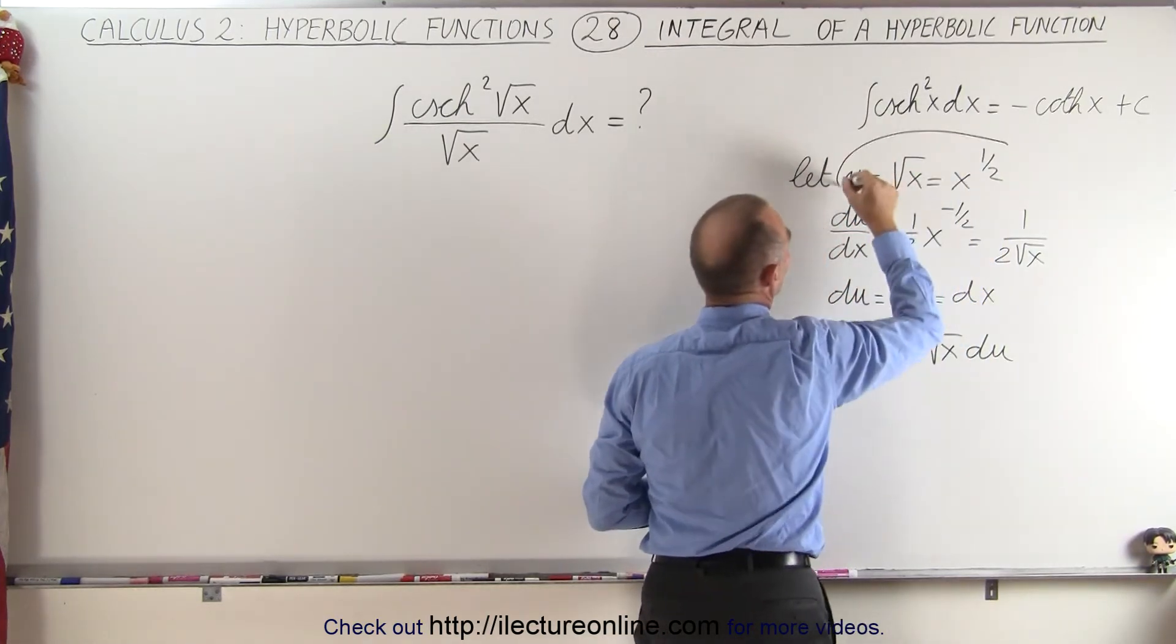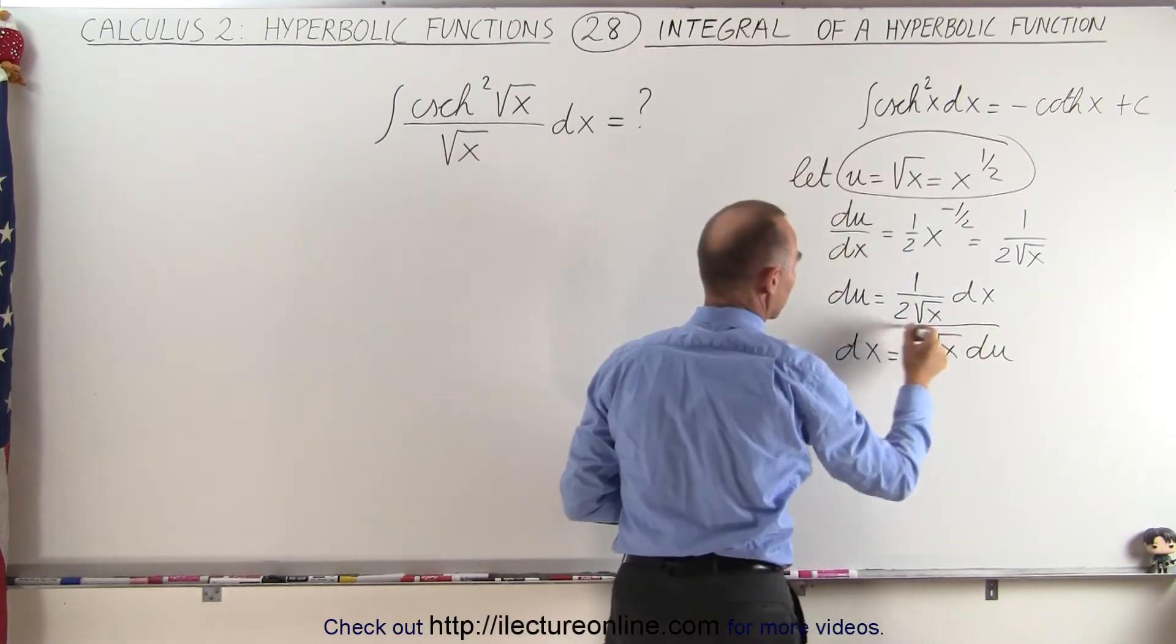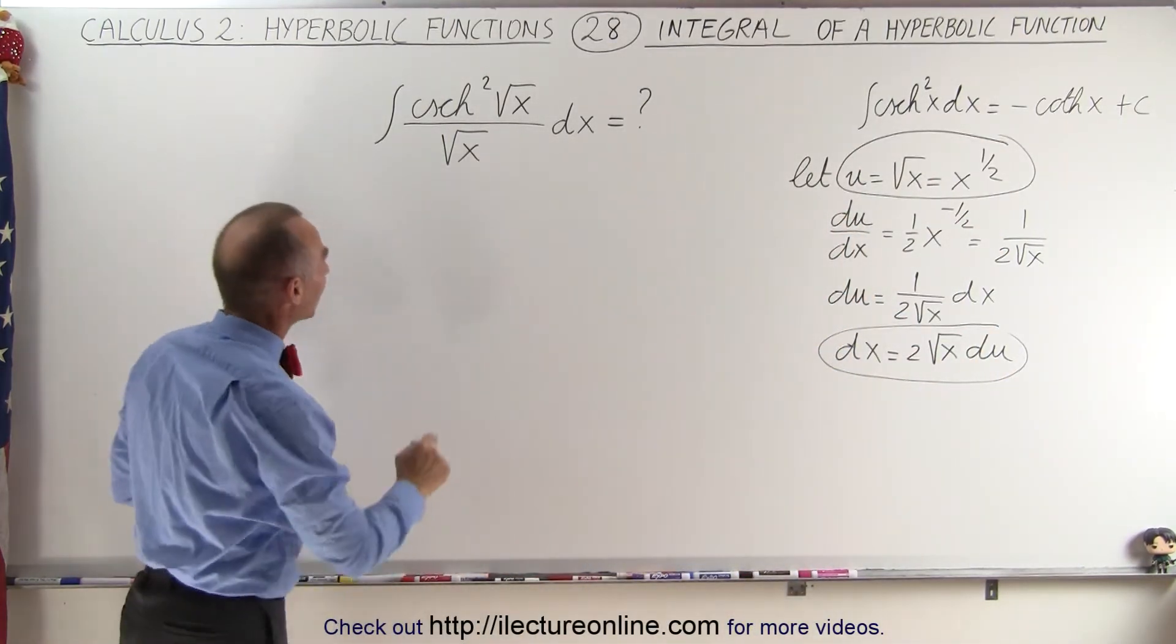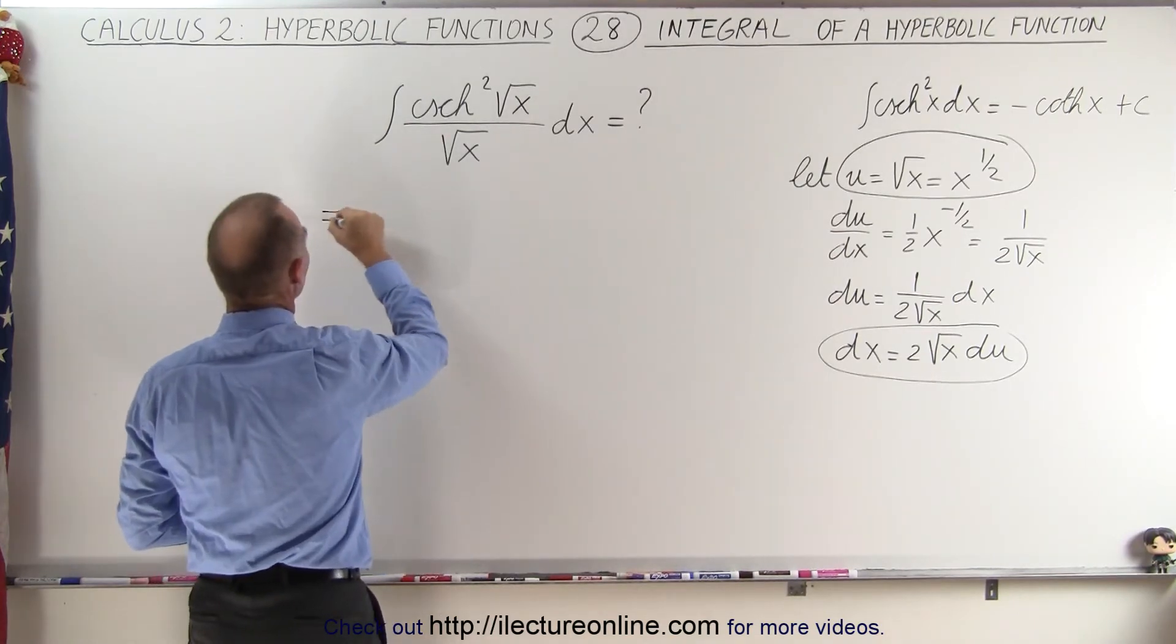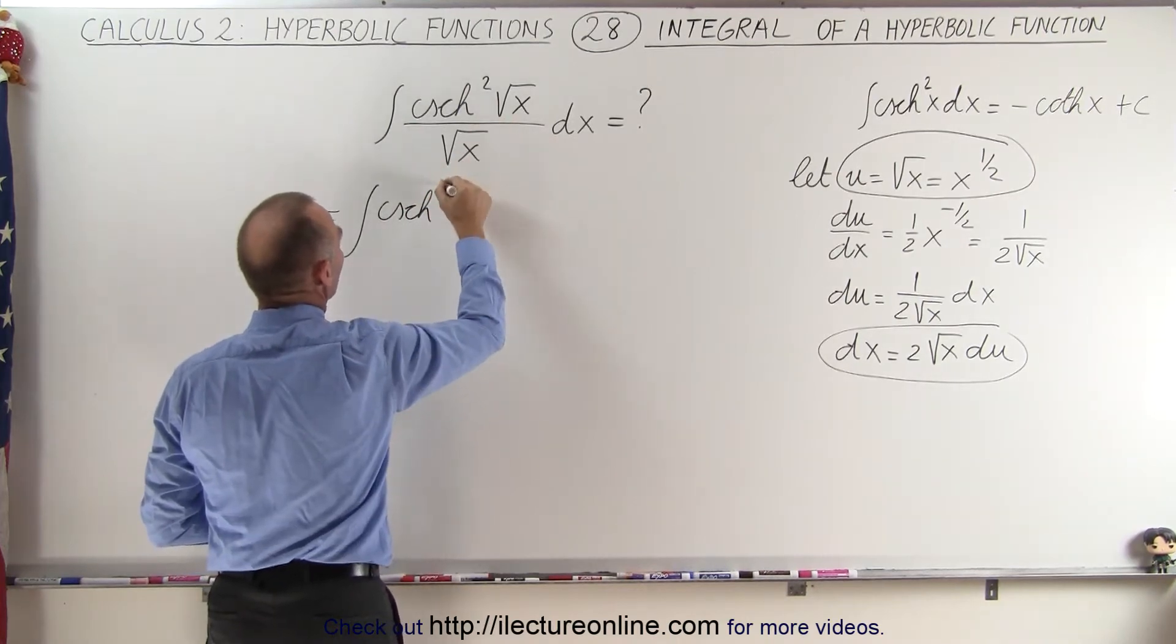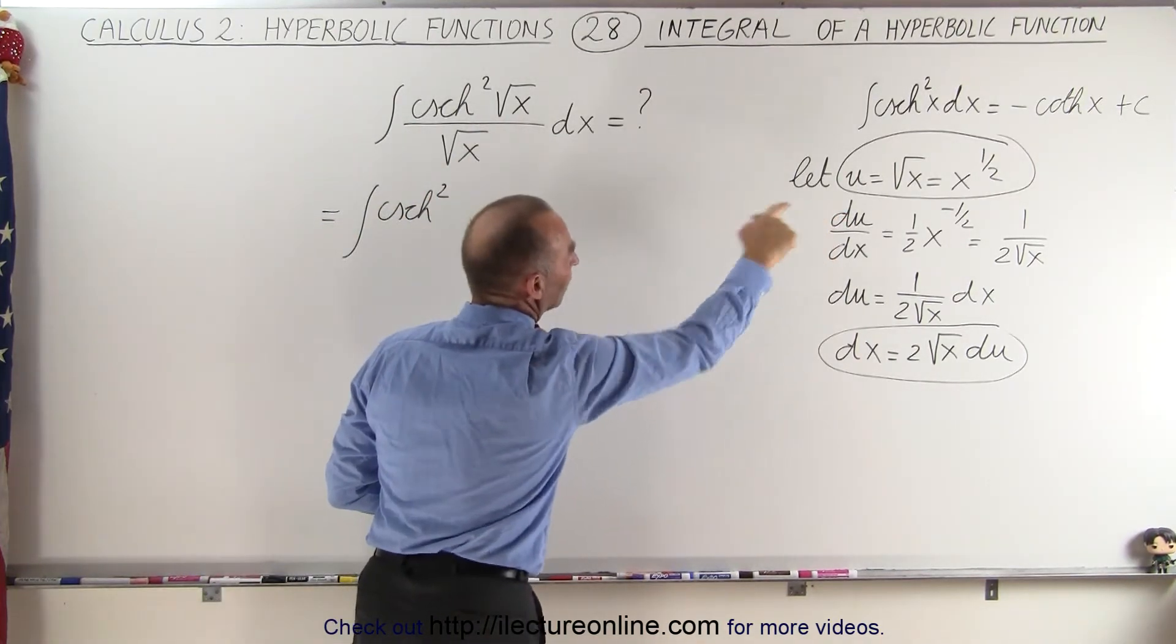And so we're going to need this substitution in here and we're going to need this substitution in our integral. Let's see what happens. So that means this becomes equal to the integral of the hyperbolic cosecant square. Instead of the square root of x, we're going to plug in u.